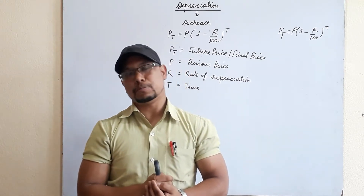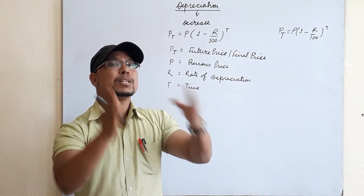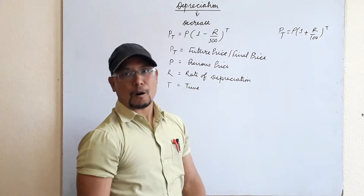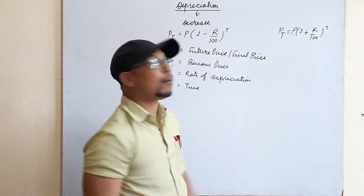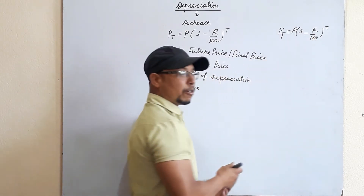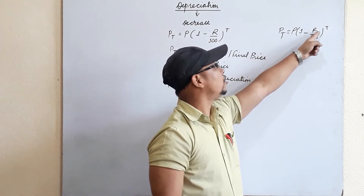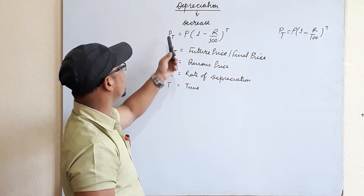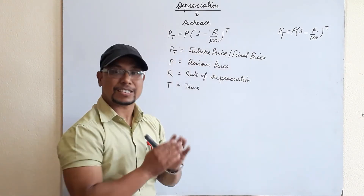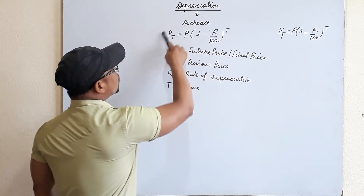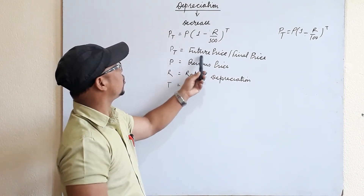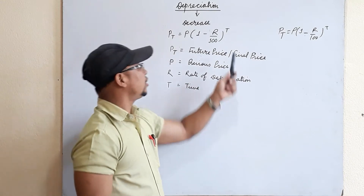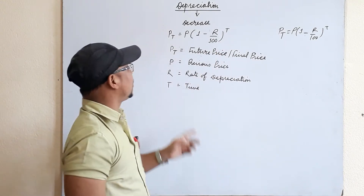The formula for compound depreciation is similar to population growth. The population growth formula is PT = P(1 + r/100)^T, and for decreasing population it is PT = P(1 − r/100)^T, where PT is the final population, P is the initial population, r is the rate, and T is time. For depreciation, we use PT = P(1 − r/100)^T, where PT is the final or future price, P is the initial or previous price, r is the rate of depreciation, and T is the time.